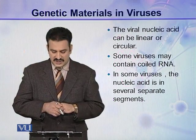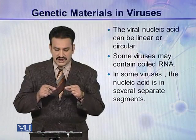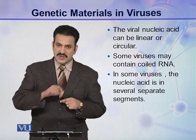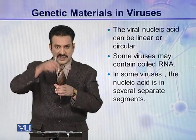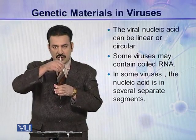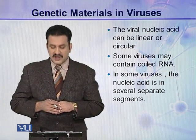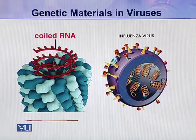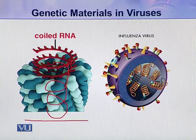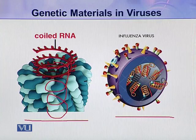The viral nucleic acid can be linear or circular — it may be a linear molecule of RNA or DNA, or it may be circular. Some viruses may contain coiled RNA, where the RNA inside the capsid is present in a coiled form. While in some viruses the nucleic acid is in several separate segments. For example, in this virus you can see a single coiled molecule of RNA present inside the capsid. Similarly, in the influenza virus, you can see there are several segments of nucleic acid present inside the capsid.